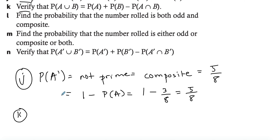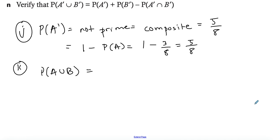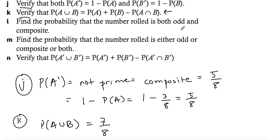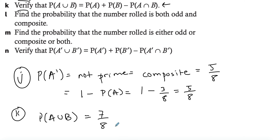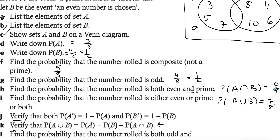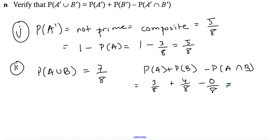For part K, we already found P(A union B) is seven over eight. We want to confirm this using the combined events rule: P(A) + P(B) − P(A intersect B). By this point you've already found all the probabilities: P(A) is three over eight, P(B) is four over eight, and P(A intersect B) is zero over eight. So three over eight plus four over eight minus zero over eight equals seven over eight — the exact same answer.